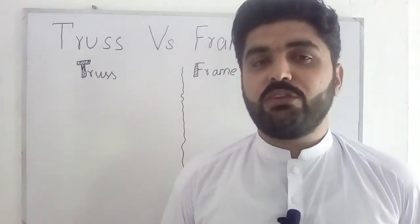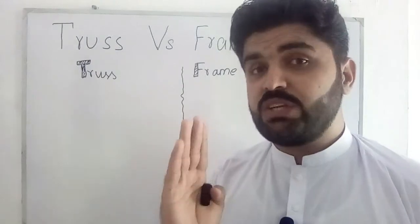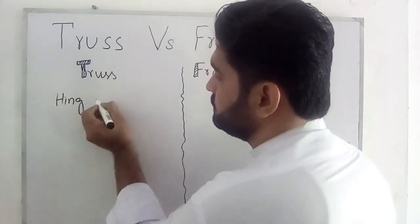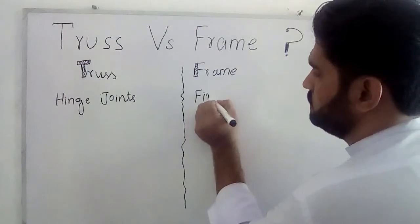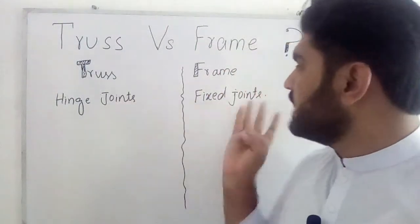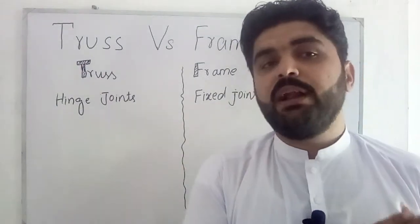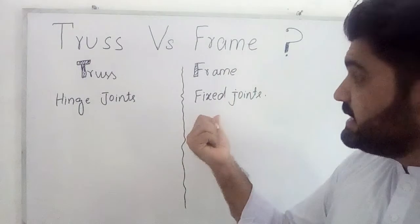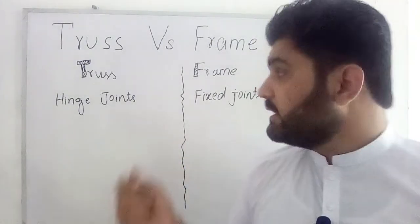The first difference between truss and frame is that in a truss structure all the joints are hinge joints, while in a frame structure all joints are rigid joints. A hinge joint means that a truss member cannot transfer moment from one member to another member, because a hinge joint doesn't provide a reaction against any moment. While in a rigid joint, the frame member can transport moment from one member to another member, and that rigid joint can provide a resistance against a moment.